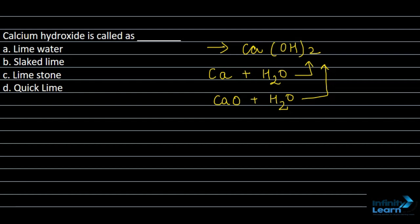Here in this question, we have to tell that calcium hydroxide is called as dash. And basically, in four options, we have the common names of chemical substances given.